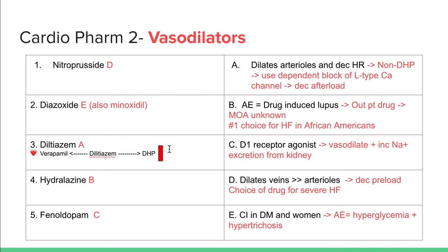Diltiazem works on the heart and also exerts effects on blood vessels, so it's a non-dihydropyridine that can help dilate arterioles but also decrease heart rate. Hydralazine is the number one choice of drug for heart failure in African Americans — it's more of an outpatient drug, and a very high yield adverse effect to know is drug-induced lupus. Fenoldopam is a dopamine agonist — a D1 receptor agonist — that helps vasodilate and increase sodium excretion from the kidney, thereby also helping lower blood pressure.